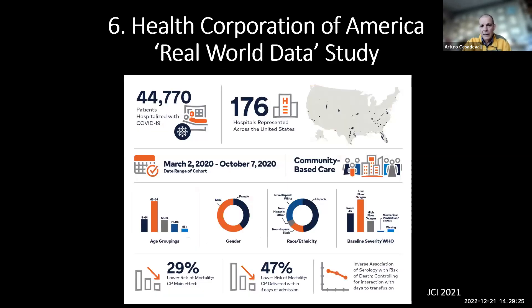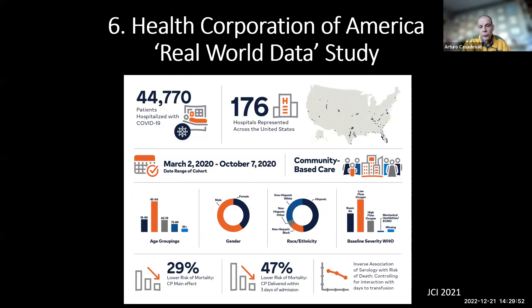Real-world data: the Health Corporation of America used artificial intelligence to go into their database — no bias — matching by computer. If you treat early, they got a 47% reduction in mortality when plasma was given within three days of admission.